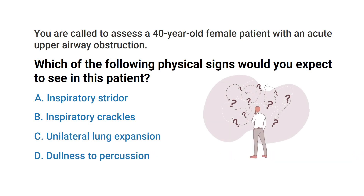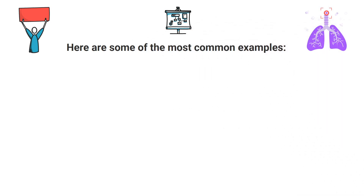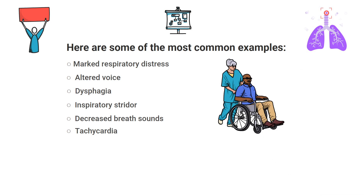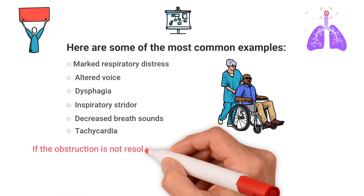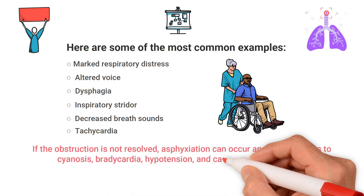Do you know the answer? Let's break it down. To get this one correct, you simply needed to be familiar with the signs of an acute upper airway obstruction. Here are some of the most common examples: marked respiratory distress, altered voice, dysphagia, inspiratory stridor, decreased breath sounds, and tachycardia.